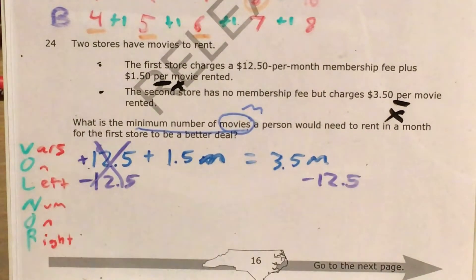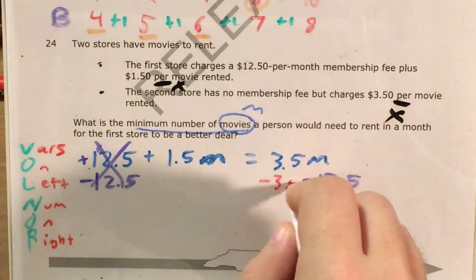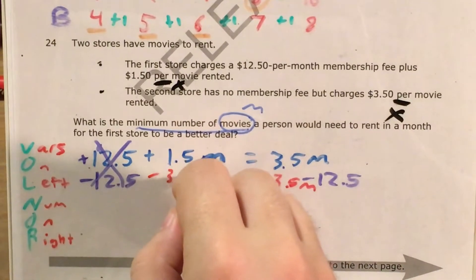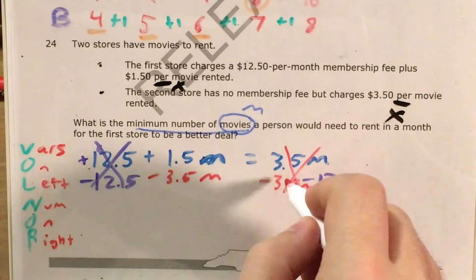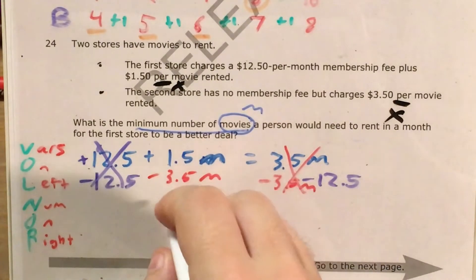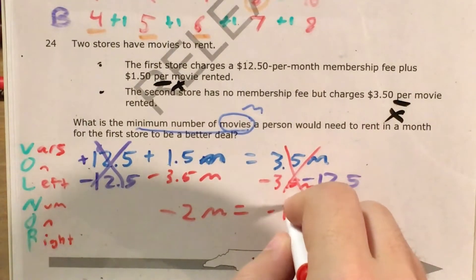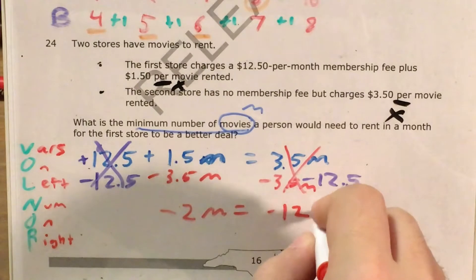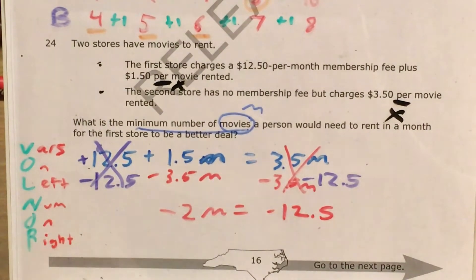Now I want to get all my variables on the left side. I subtract $3.50m from both sides — that goes away — leaving $1.50m minus $3.50m on the left. Using integer rules, that gives me negative 2m equals negative 12.5.